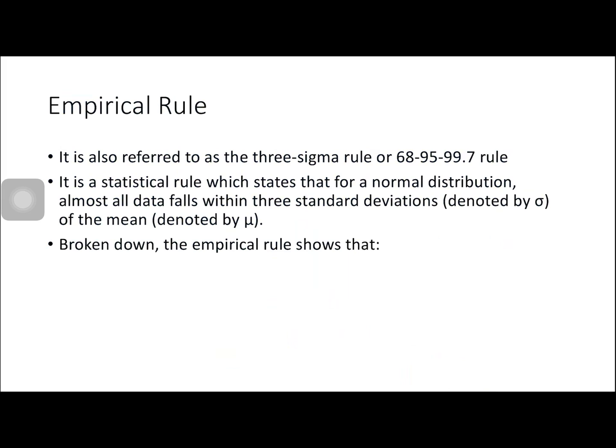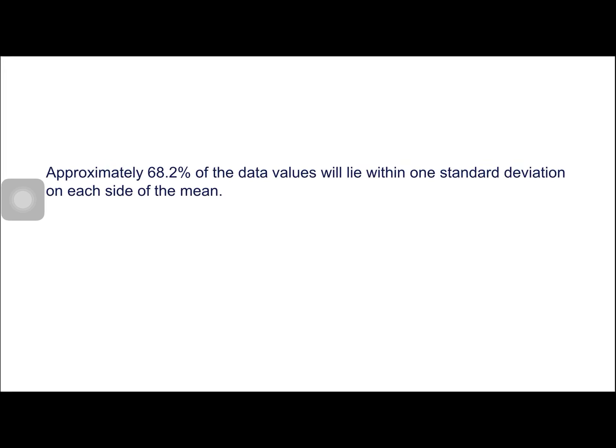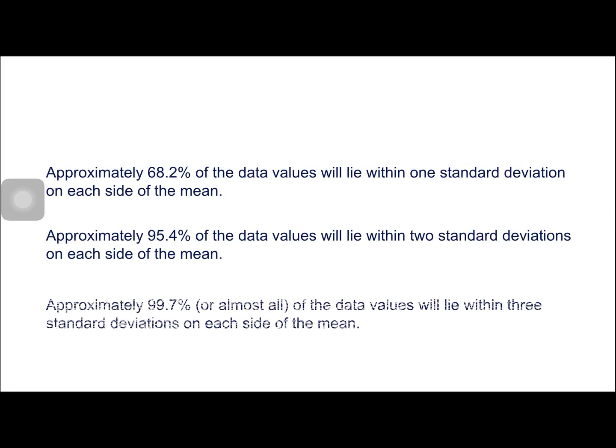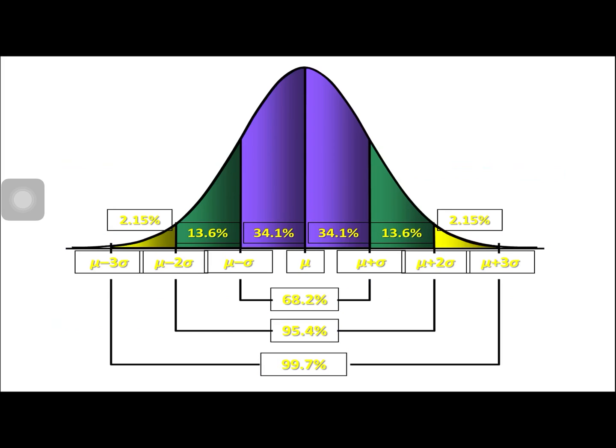Next is the empirical rule, also referred to as the 3-sigma rule or 68-95-99.7 rule. It is a statistical rule which states that for a normal distribution, almost all data falls within 3 standard deviations of the mean. Approximately 68.2% of data values lie within 1 standard deviation on each side of the mean. Approximately 95.4% lie within 2 standard deviations, and approximately 99.7% — almost all — lie within 3 standard deviations on each side of the mean.